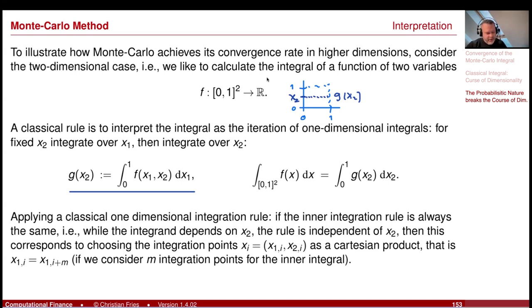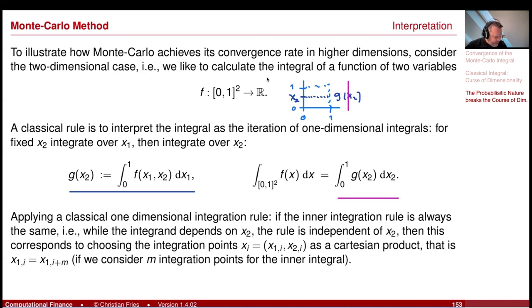Then the integral of f is obtained by integrating all the g's. If we do this with a classical integration rule, we are building the Cartesian product of our evaluation points. If we use m integration points for the inner integral, we end up with m times m — m squared integration points total.